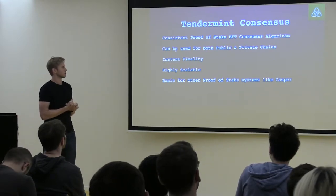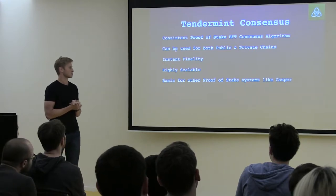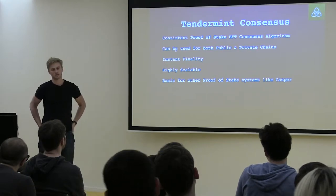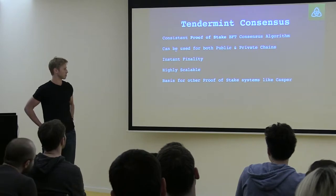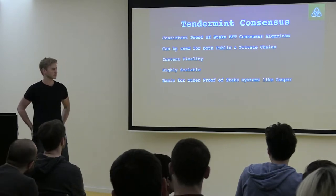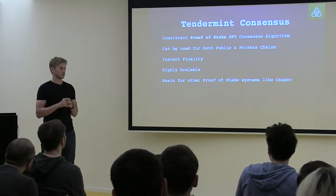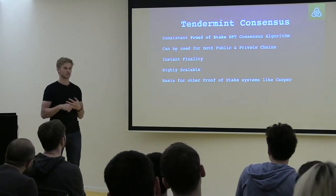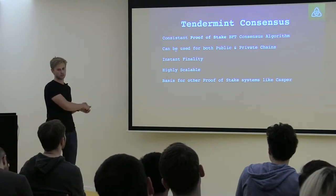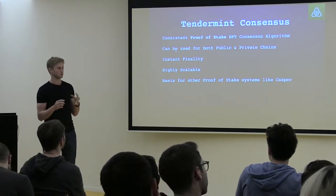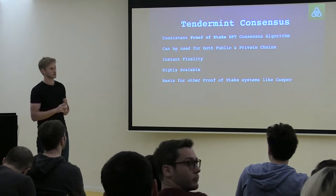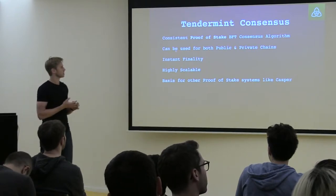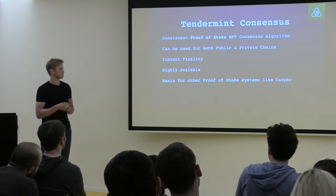The Tendermint consensus was started in 2014. It was inspired by the literature around Byzantine Fault Tolerant algorithms — there are academic papers on that going back to the 1980s. Jae Kwon looked at proof of work and other efforts and said this isn't very efficient — can't we use this academic research and adapt it for a blockchain environment? Tendermint has been around for about four years now.